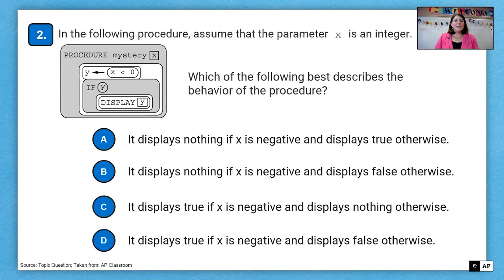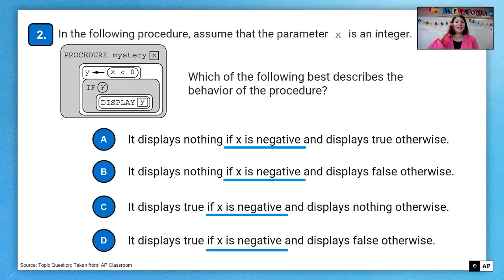Question two, in the following procedure, assume that the parameter X is an integer. So we have X, if X is negative in every single one of our answers. So let's think about if X is negative, that means Y would be assigned the value true. So if Y is assigned true, then our if is processed because it says if Y.